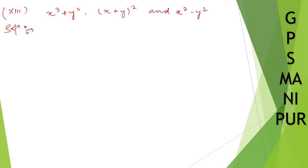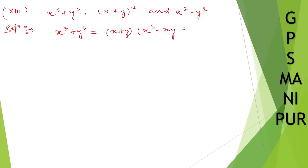So, x cube plus y cube — I can write down using the formula: x cube plus y cube is equal to x plus y, times x square minus x y plus y square.